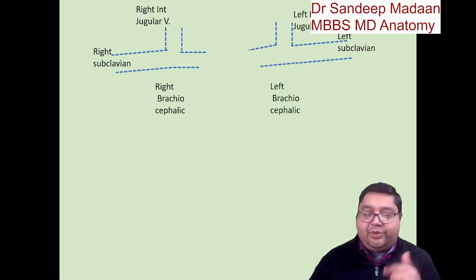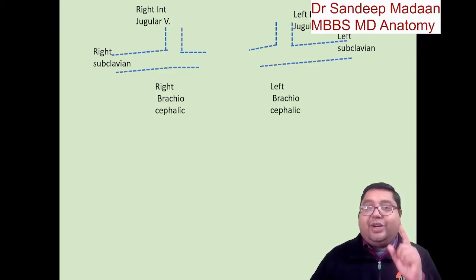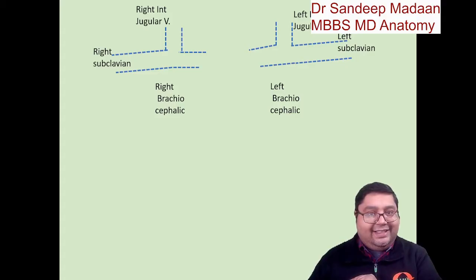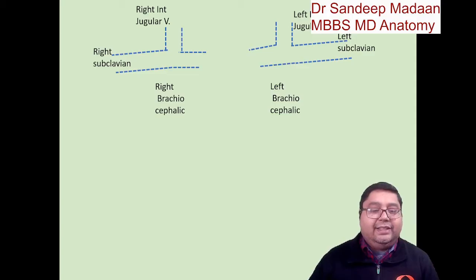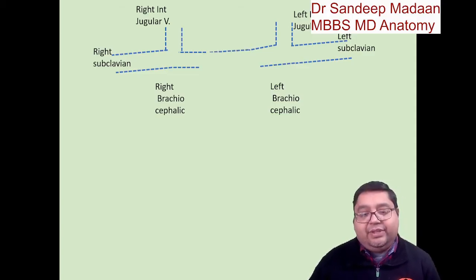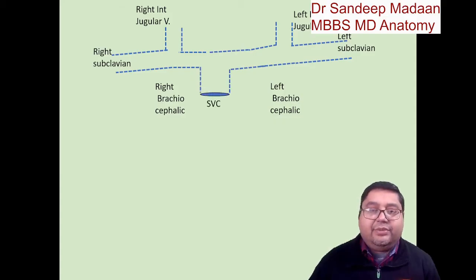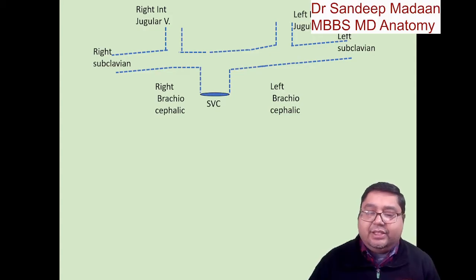One very important point: if I ask you how many brachiocephalic arteries there are, that is only one, only on the right side. But if I ask how many brachiocephalic veins there are, the answer is two — left and right. These two brachiocephalic veins will merge to make the superior vena cava.